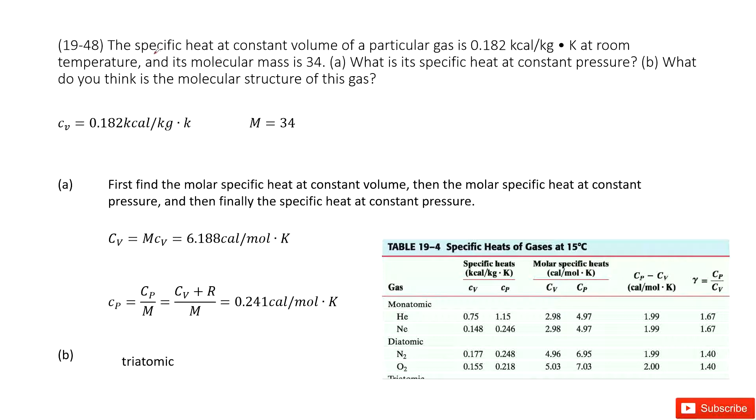It tells us the specific heat at constant volume of our gas is 0.182, so we write it there. This is the specific heat, so it is little c_v, 0.182. And room temperature is 20 centigrade. The molecular mass is 34, so capital M equals 34.